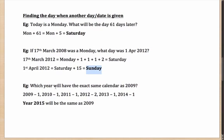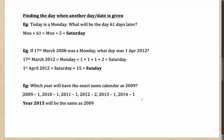Which year will have the exact same calendar as 2009? In 2009 you add 1 odd day; in 2010, 1 odd day; in 2011, 1 odd day; in 2012, 2 odd days (leap year); in 2013, 1 odd day; in 2014, 1 odd day — totalling 1+1+1+2+1+1 equals 7 odd days, which is exactly 1 full week. So the year 2015 will have the same calendar as 2009.